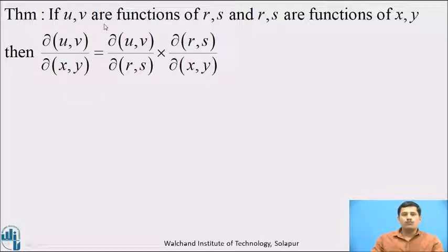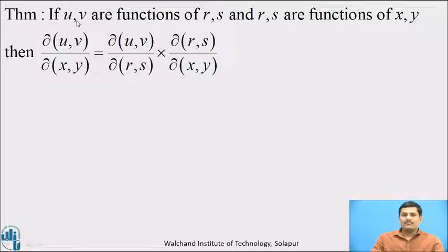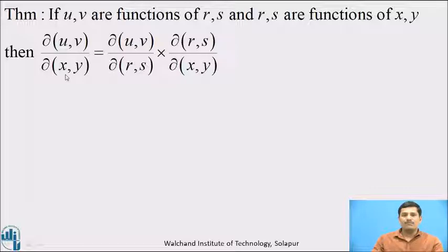If U, V are functions of two independent variables R, S, and R, S are functions of two new independent variables X, Y, that directly indicates that U, V are composite functions of X, Y. Therefore the Jacobian of U, V with respect to X, Y is equal to the Jacobian of U, V with respect to R, S multiplied by the Jacobian of R, S with respect to X, Y.